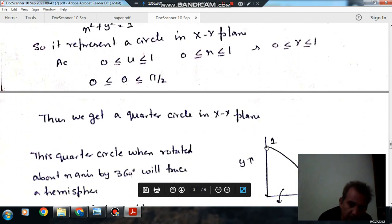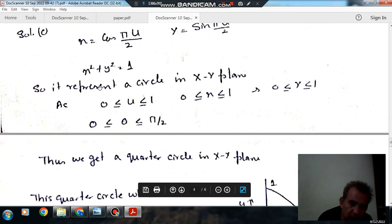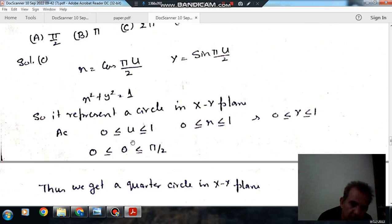It is represented like this: if x is 1 then y is 0, and if y is 1 then x is 0. So this is the circle with center at the origin and radius 1.